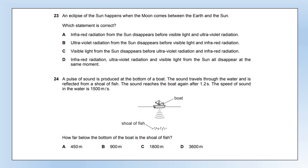An eclipse of the sun occurs when the moon comes between the Earth and the sun. Which statement is correct — does infrared disappear first, ultraviolet first, visible first, or do they all disappear at the same time? All types of radiation are produced by the sun and either get through or don't, depending on whether the sun is blocked. So the answer is option D — they all disappear at the same time.